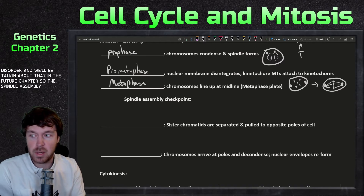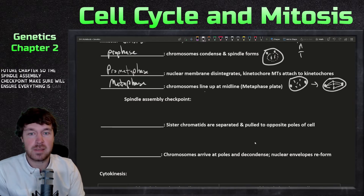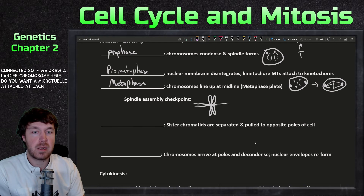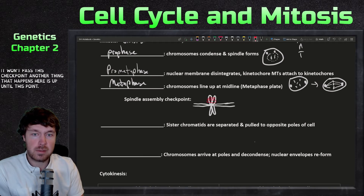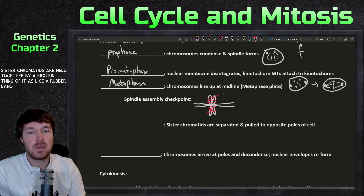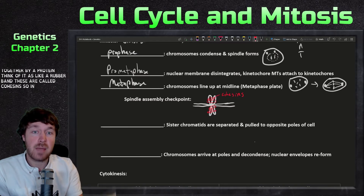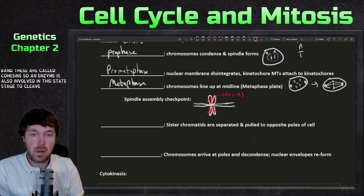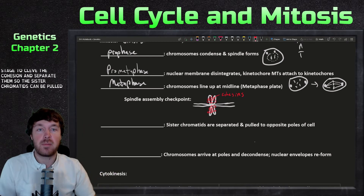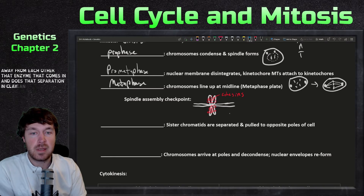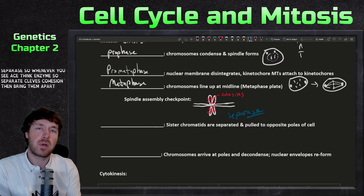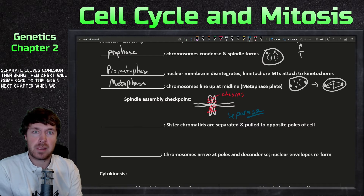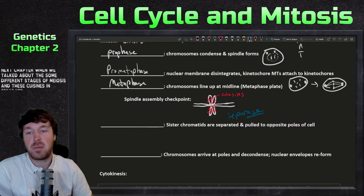The spindle assembly checkpoint ensures a microtubule is attached at each kinetochore before proceeding. Up until this point, sister chromatids are held together by proteins called cohesins — think of them as rubber bands. An enzyme called separase cleaves the cohesins to allow the sister chromatids to be pulled apart. Separase and cohesins will come up again when we discuss meiosis.